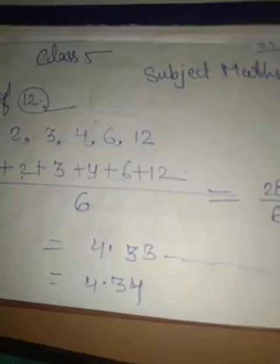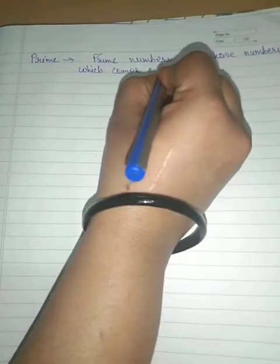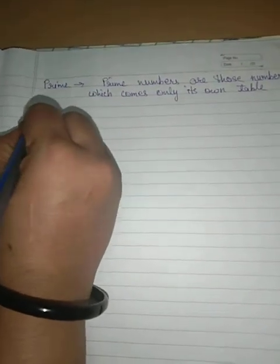I think you have cleared this factor. And what is the prime number? Prime numbers are those numbers which come in its own table. Let us give the prime number. Take the example.